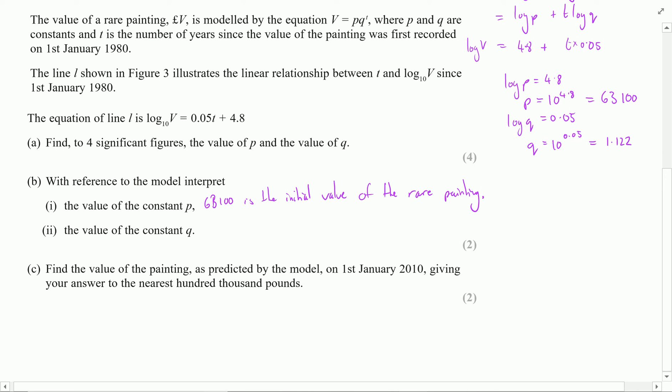Now the second part: the q. After a single year, q is going to be 1.122, so we would multiply the value by 1.122. After two years we would multiply it by that value again, after three years again, and so on. So q, this 1.122, is the factor by which the value of the rare painting increases each year.